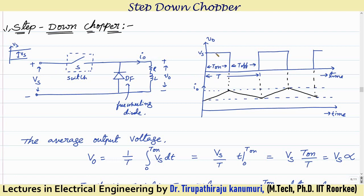This switch will be closed for a duration of T-on. When the switch is closed, the supply voltage is directly connected across the load. So the output voltage will be equal to the supply voltage for this duration. Because the inductor will oppose sudden change, the current will gradually increase from its initial value to some final value. After this, we will turn off the switch.